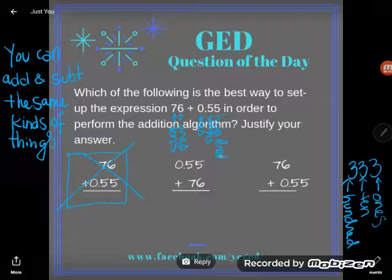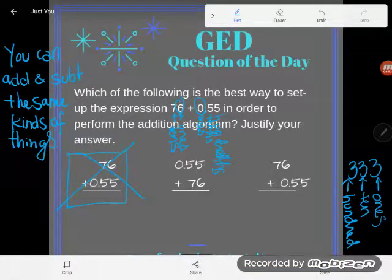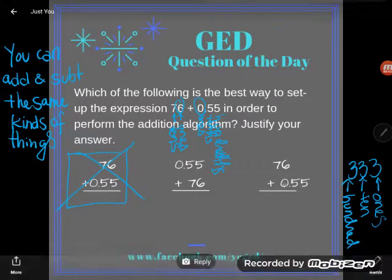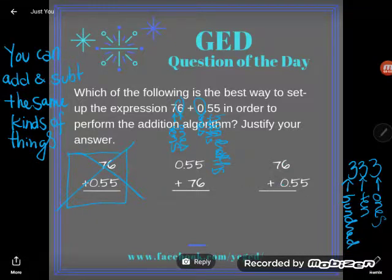The only two things these two numbers share is the ones place. That's in the ones place, that's in the ones place. So that is where I would want to line things up. The six in the ones place with the zero in the ones place. And now I'm going to go ahead and add.